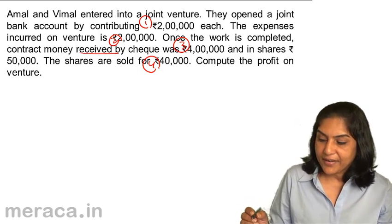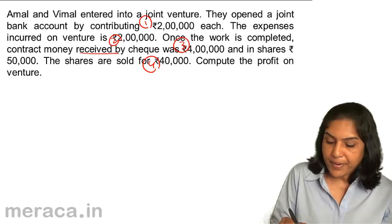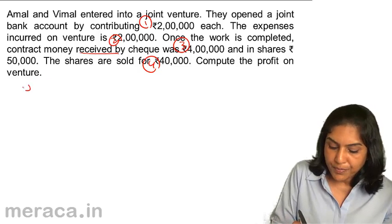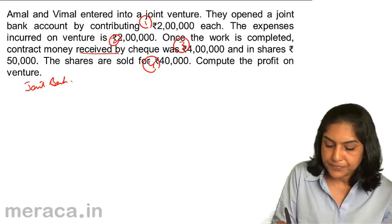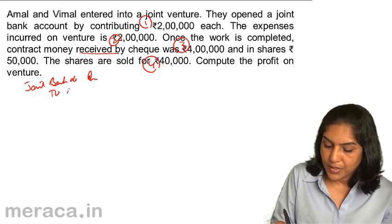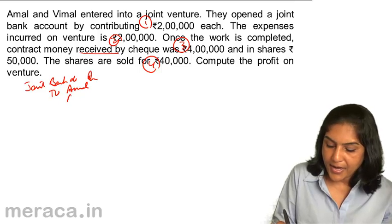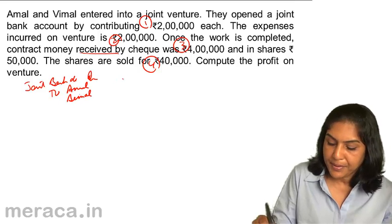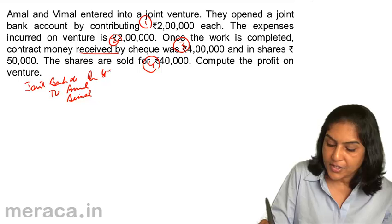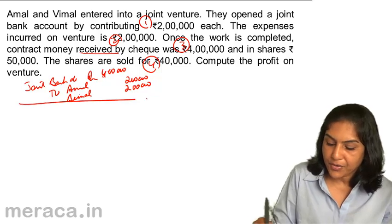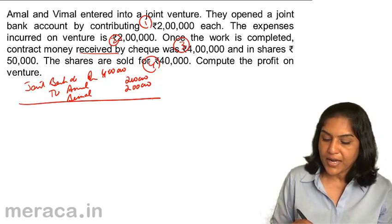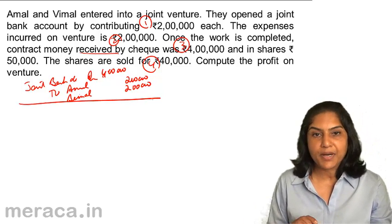What would be the entry? In order to open a joint bank account, the entry would be: joint bank account debit to Amal and to Vimal — apparently 2 lakh each. So, joint bank account debit 4 lakh, to Amal 2 lakh, to Vimal 2 lakh.